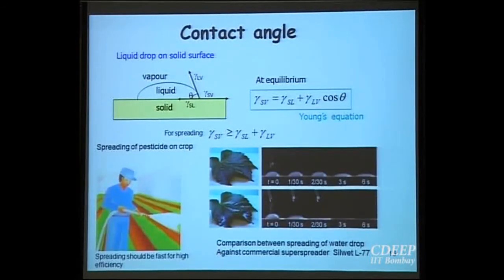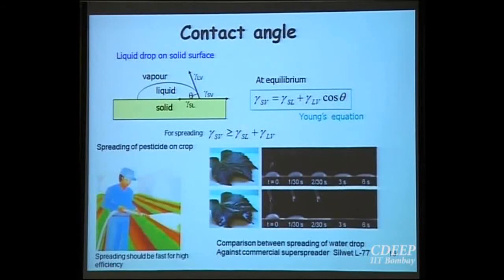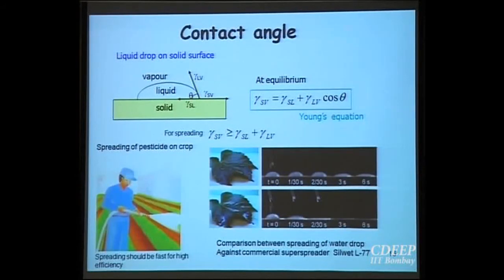I will now talk about wetting and spreading. Wetting is governed by the contact angle. When a solid is placed on a liquid, you get a contact angle theta, and at the contact line the force balance is governed by Young's equation: gamma_LV cos(theta) + gamma_SL = gamma_SV. If gamma_SV is greater than the sum of gamma_LV and gamma_SL, you get spreading even at theta equal to zero. For spreading, gamma_SV must be much greater than gamma_SL plus gamma_LV.